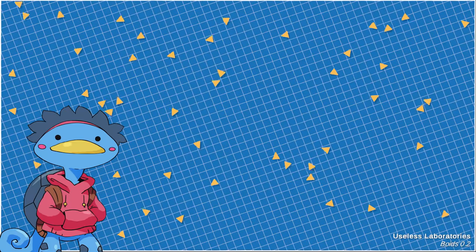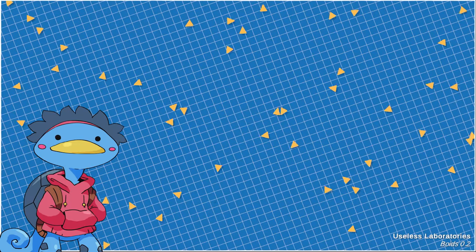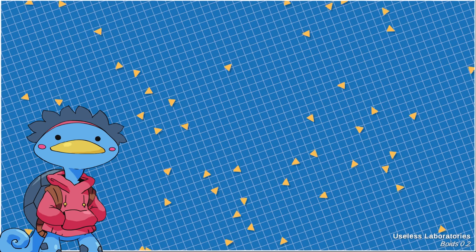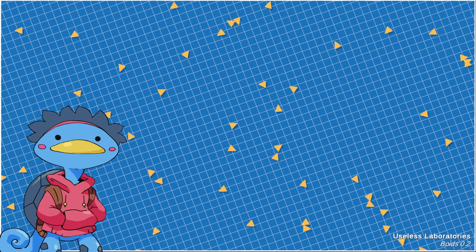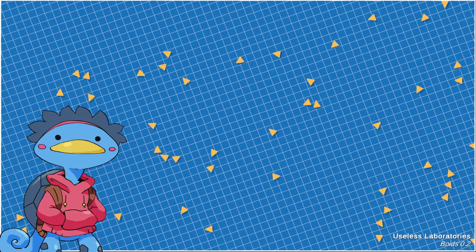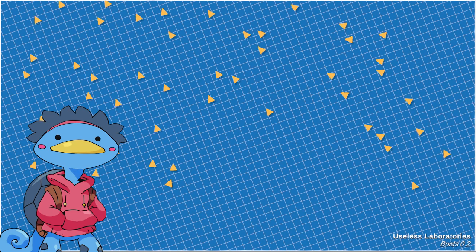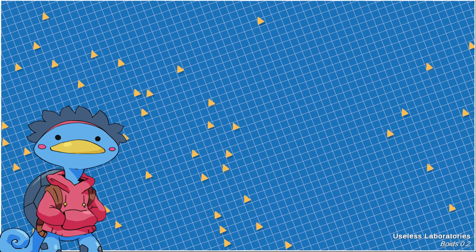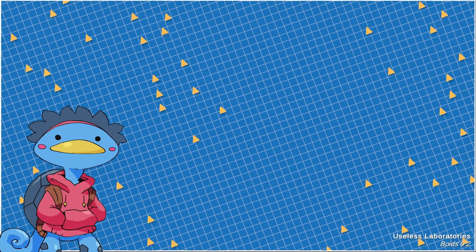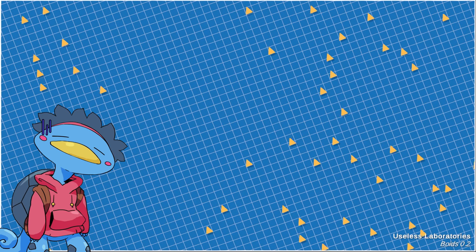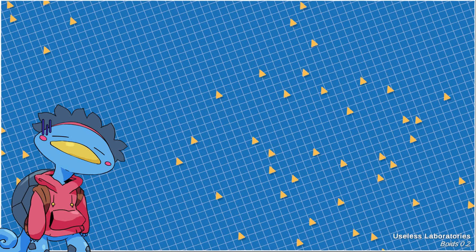Next is alignment. Boids will try to go in the general direction that other boids are going. This is basically the same as the separation rule, but instead of steering away from neighbors, the weighted sum of vectors uses the line of sight vector of the neighbors. With this rule, you kind of see a group behavior emerge all of a sudden, which is pretty cool, although they quickly end up all facing the same direction, so we need a final rule.